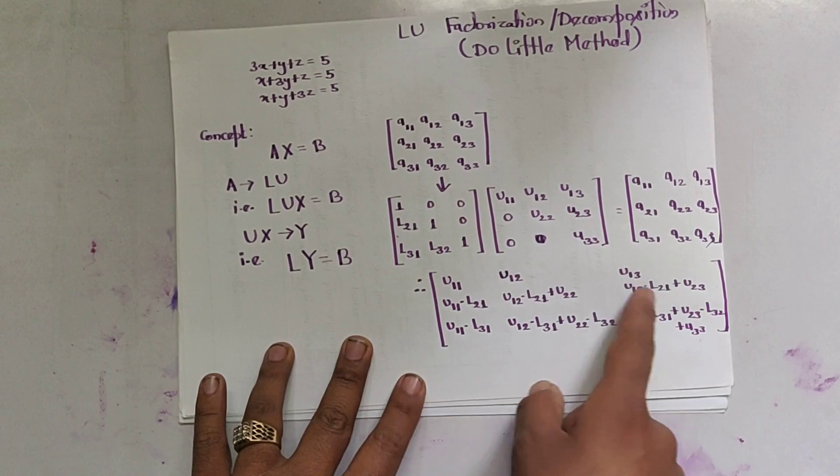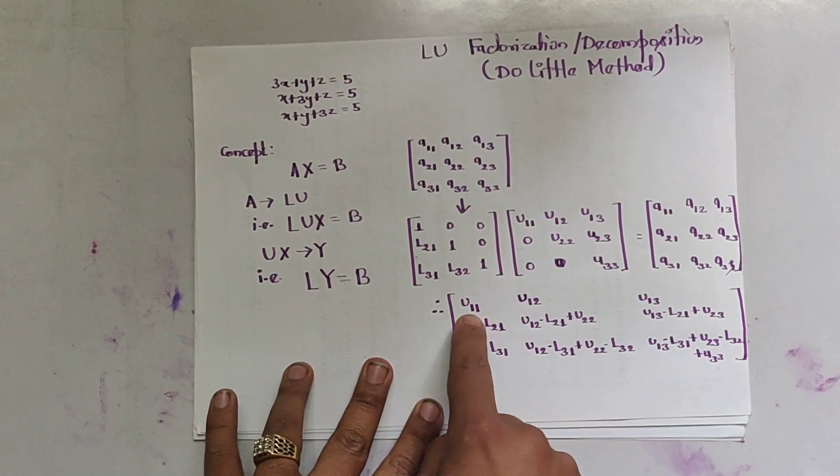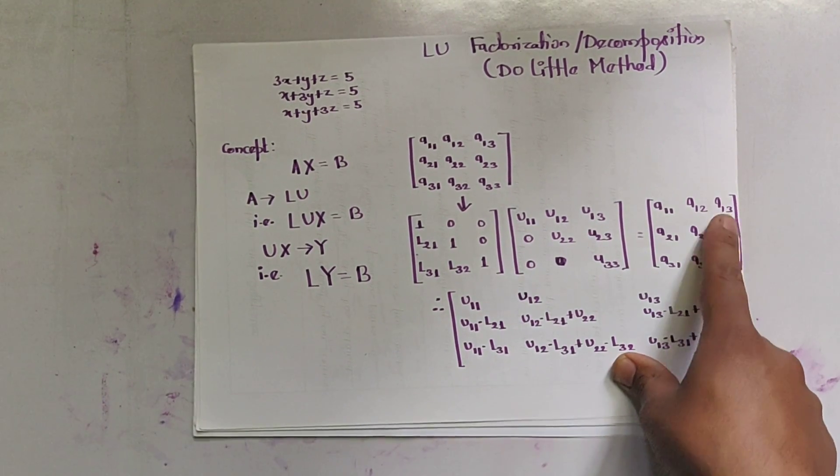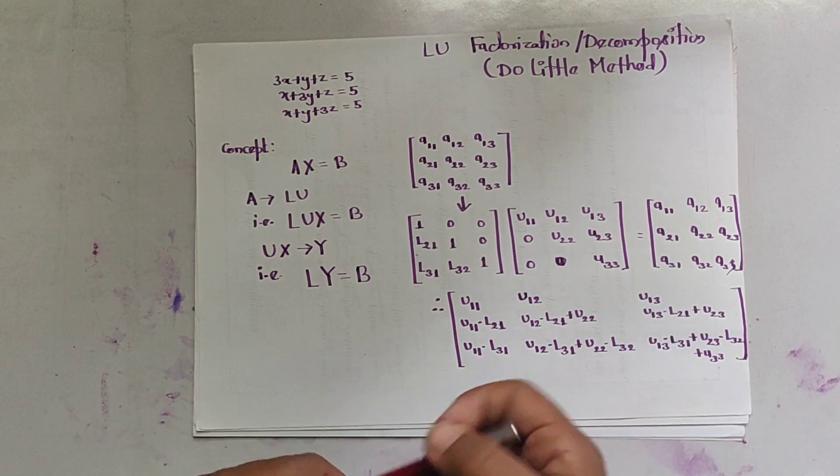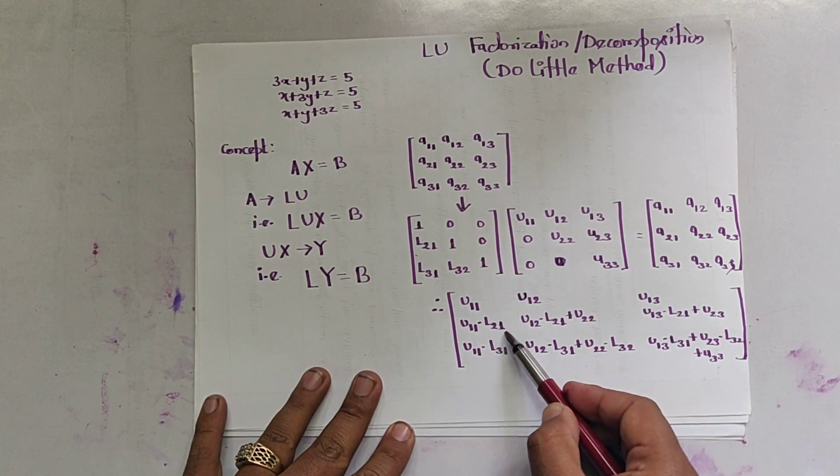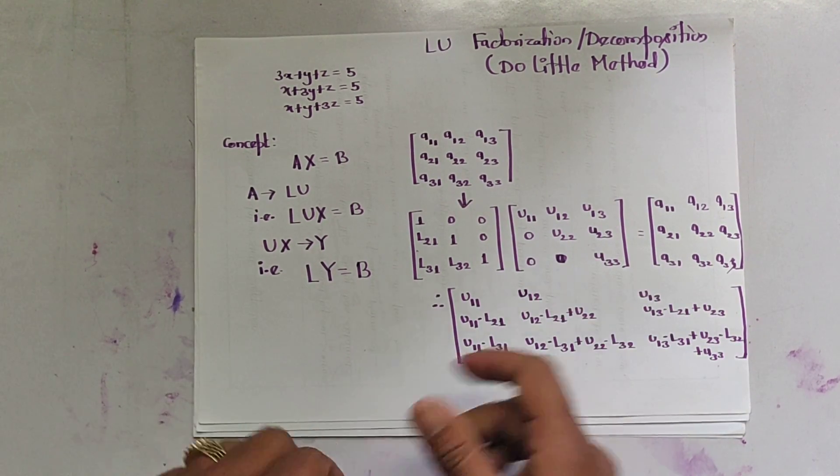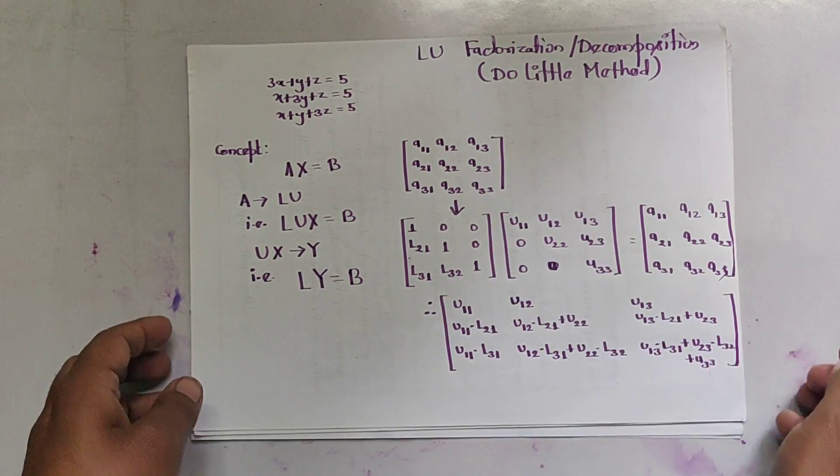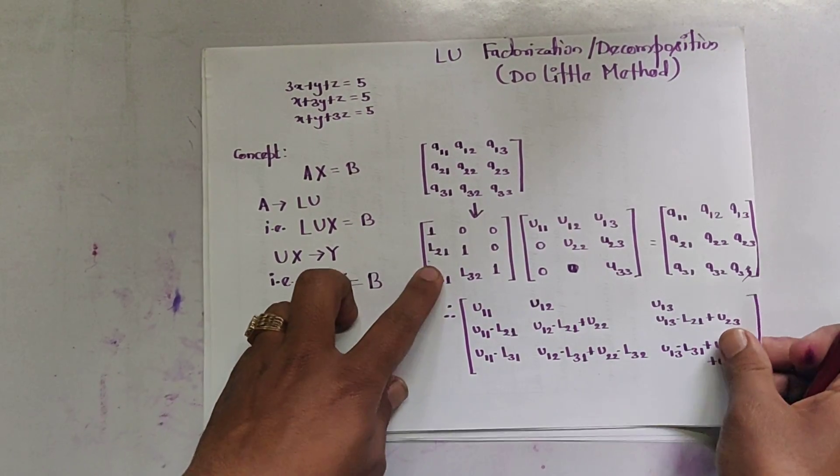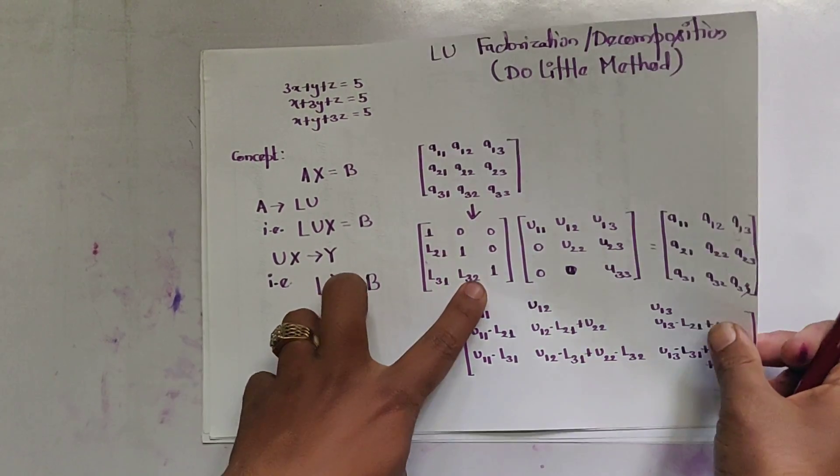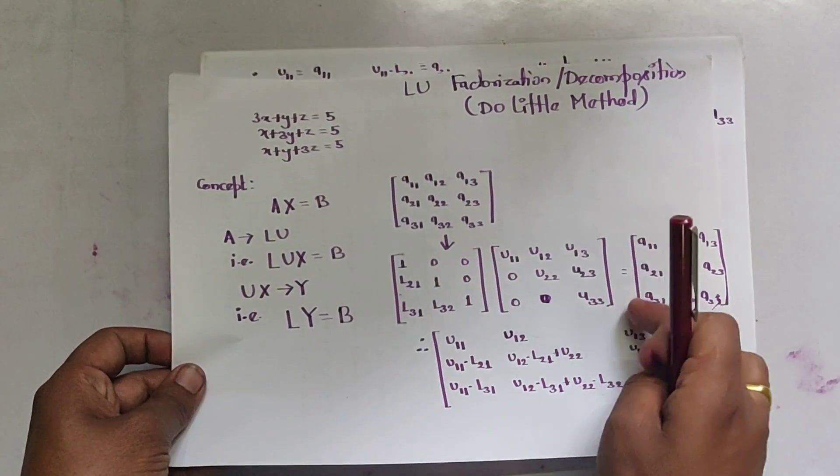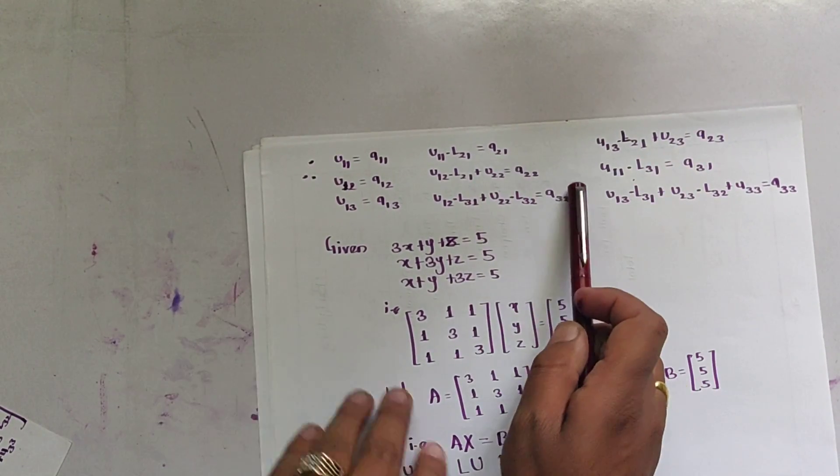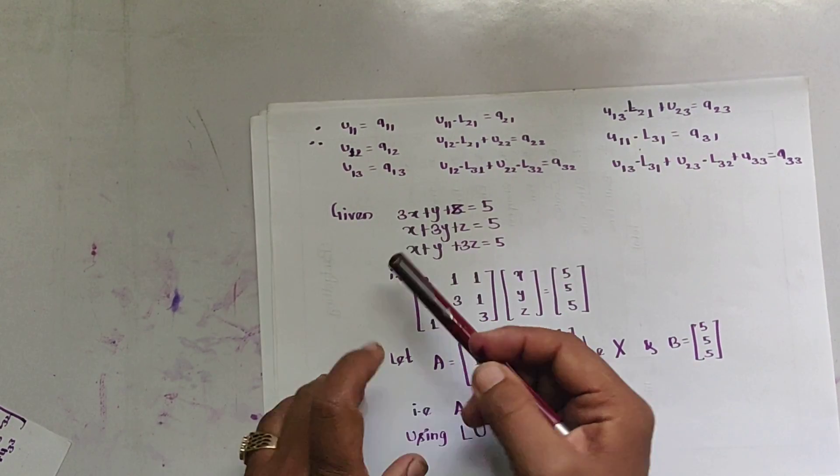By multiplying these two, we get U11 = A11, U12 = A12, U13 = A13. Similarly, U11 into L21 equals A21, and by using this equation and this value, we calculate the values of L21, L31, L32, and U12. These are the formulas which we get by using the matrix. Let us solve an example.